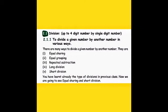To divide a given number by another number, there are various ways. One way is equal sharing, second way is equal grouping, third way is repeated subtraction, fourth one is long division, fifth one is short division. You have learned already these types of division in the previous class.